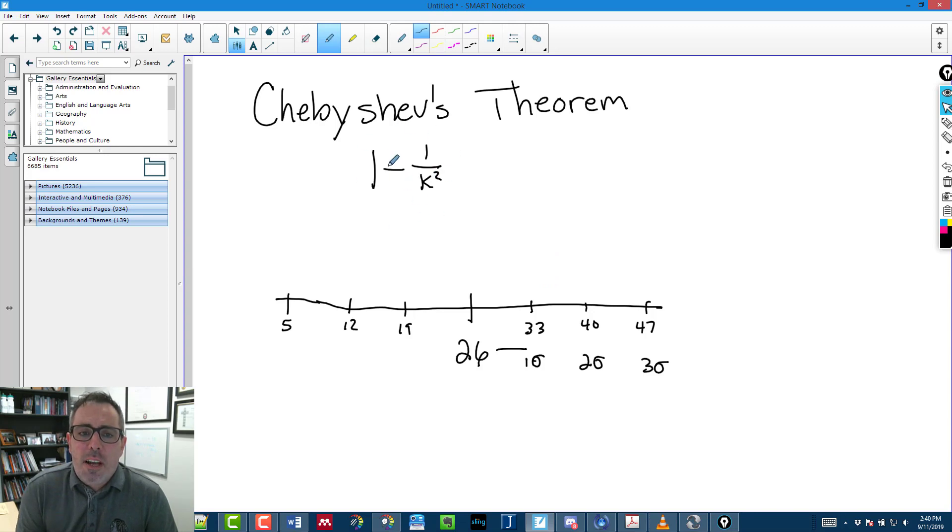This theorem helps us figure out how many standard deviations, and so when I put a 2 in for k, when I say k is equal to 2, I am really doing 1 minus 1 over 2 squared, or 1 minus 1 fourth, which is 3 fourths, or 75%.